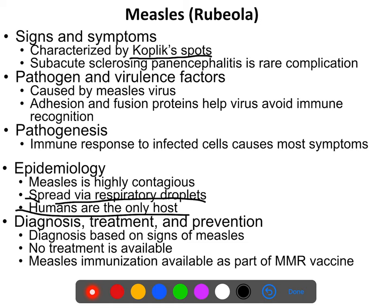Measles is spread by respiratory droplets and humans are the only host. Diagnosis is based on the characteristic Koplik spots. There is no treatment other than palliative care — making the person comfortable with fluids and supportive measures. We have a very effective measles vaccine given as part of the MMR, which produces a high level of long-lasting immunity. For a number of years measles was completely unknown in the United States, with several decades of zero or just one or two cases.